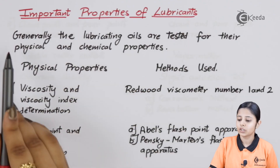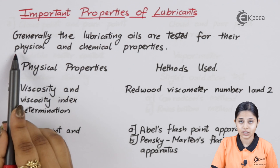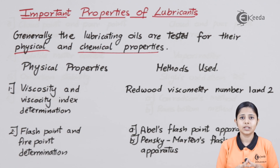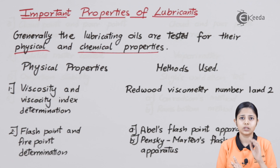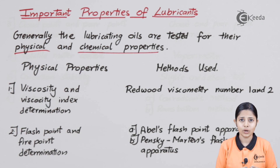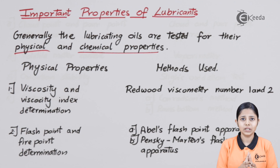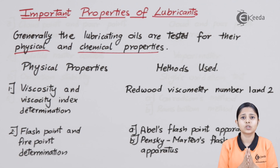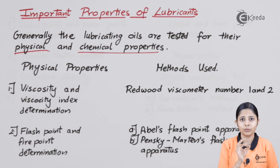Important properties of lubricants. Generally the lubricating oils are tested for their physical and chemical properties. For example, if a machine is working at 1000 degrees Celsius but the boiling point of the oil is only 500 degrees Celsius, the moment I put that oil to lubricate two parts in friction, the oil will evaporate. So there is no point using that oil. Boiling points and melting points are nothing but physical properties.